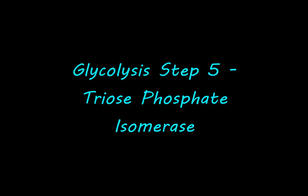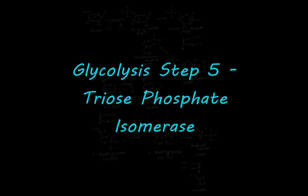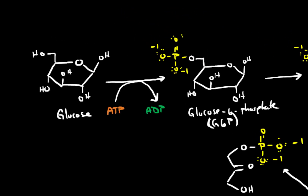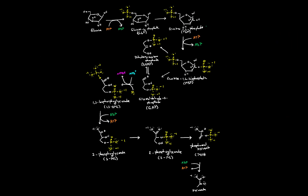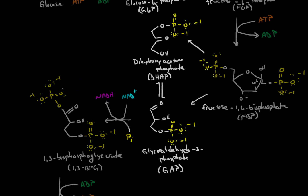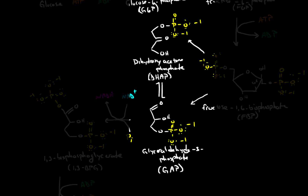In the last couple of videos, we spent a lot of time thinking critically about the conversion of glucose to glucose 6-phosphate. In this video, we're going to go through a similar process of thinking about the reaction that converts dihydroxyacetone phosphate into glyceraldehyde 3-phosphate. This is step number five in the glycolysis pathway. We'll first think about the mechanism that this reaction proceeds through, and then we'll look at the active site of the enzyme and see how it presents a chemical environment that can facilitate this mechanism.